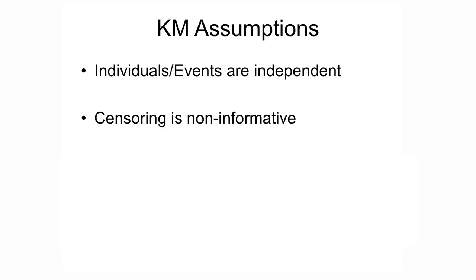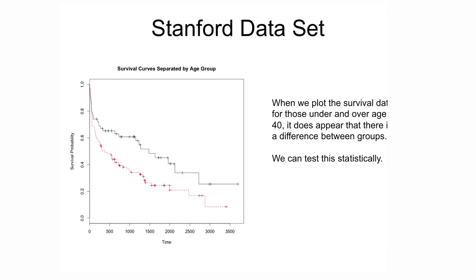Key assumptions for the Kaplan-Meier method are that individuals and events are independent, and that censoring is non-informative. Looking at another example comparing survival for those over and under age 40 — those over 40 in red and those under 40 in black — the red curve is well below the black curve for most of the follow-up time. The median survival of the over-40 group is about half that of the under-40 group, suggesting that survival is shorter in those over 40.